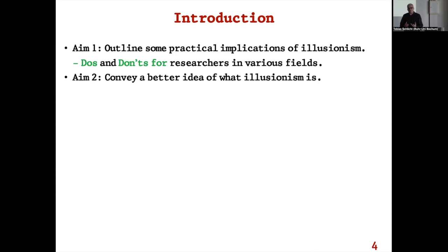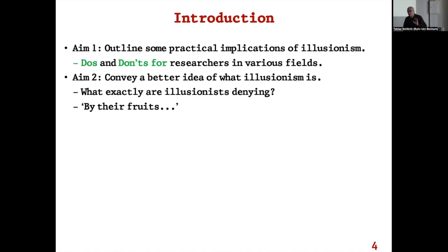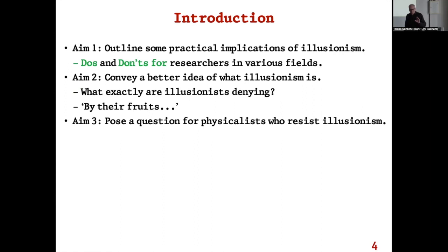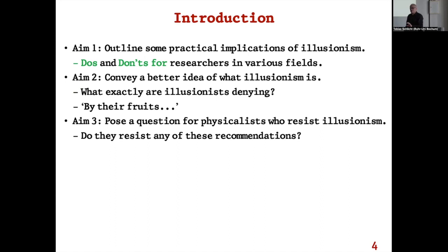It's not easy to get a grip on these notions, and that is part of the motivation for illusionism itself. Instead of getting bogged down, let's look at the cash value — what illusionists actually deny can be cashed out by looking at their recommendations. By their fruits shall you know them. This also poses a question for physicalists who resist illusionism: do they resist any of these recommendations? If not, it's just a matter of presentation and rhetoric rather than anything substantial.